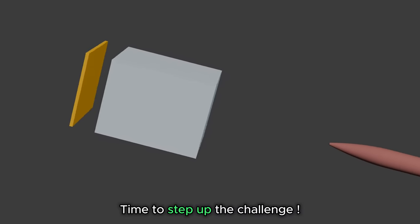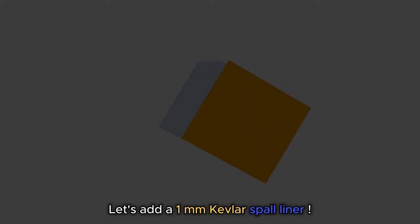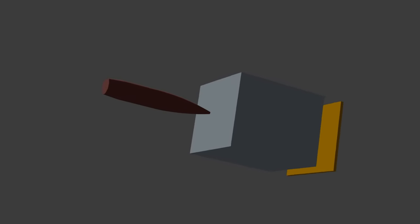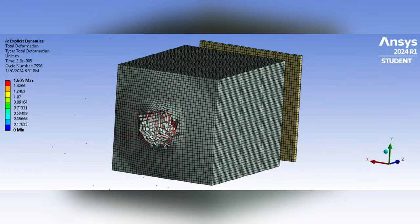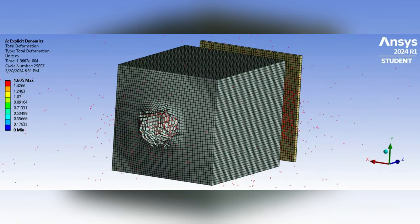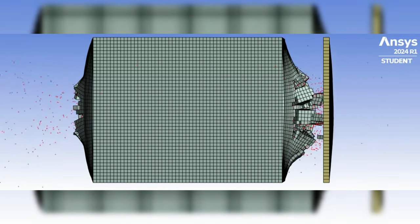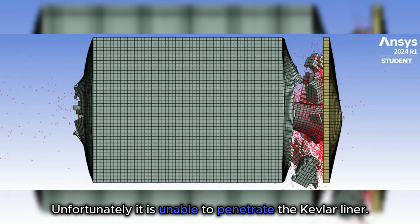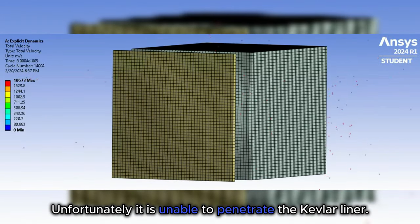Time to step up the challenge. Let's add a 1mm Kevlar spall liner. Unfortunately, it is unable to penetrate the Kevlar liner.